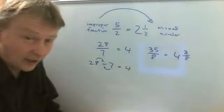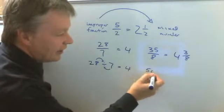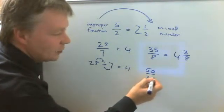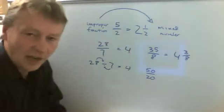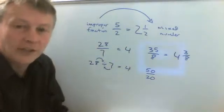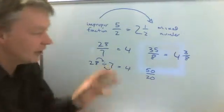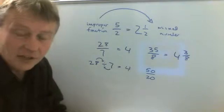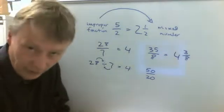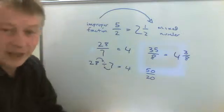So one final example might be something like 50 over 20. Well, we could say how many lots of 20 are there in 50, but one of the things we can do with fractions, which is what makes working with fractions really useful, is that we can use equivalent fractions first before we start getting involved in any division.